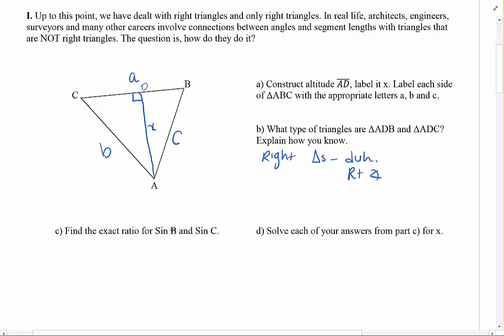All right, now find the exact ratio for sine B and sine C. So I'm going to come over here and say sine B should be opposite over hypotenuse, right? So sine B, opposite from B in the right triangle, because SOHCAHTOA only applies to right triangles. SOHCAHTOA, S-O-H, opposite hypotenuse. Only right triangles have a hypotenuse.